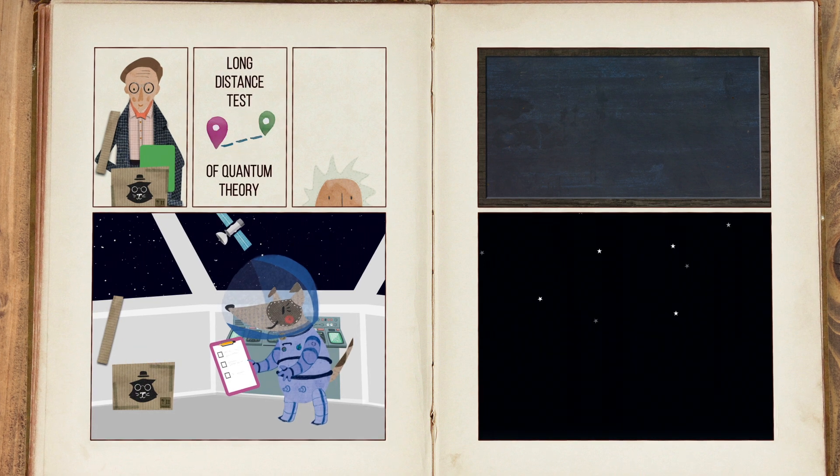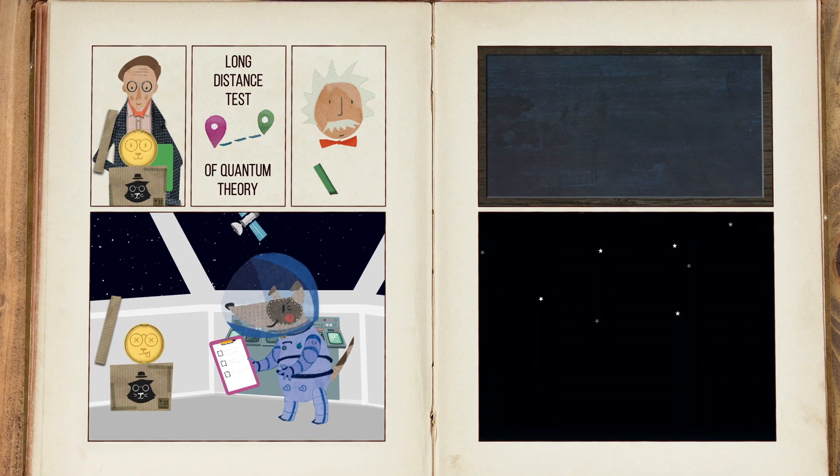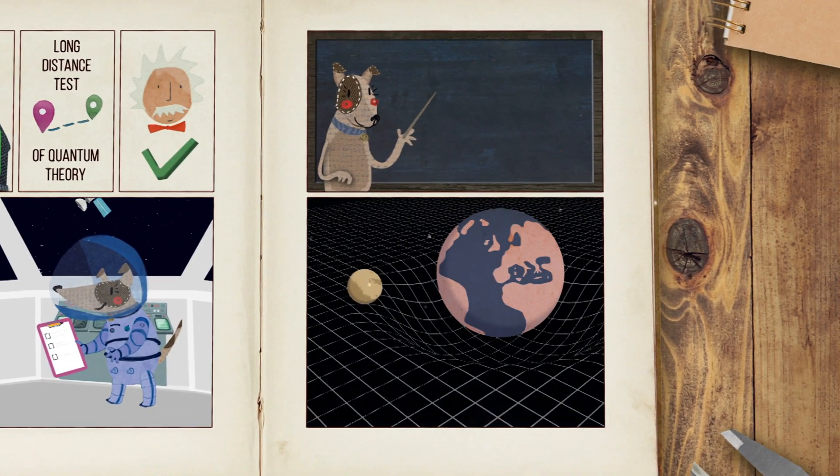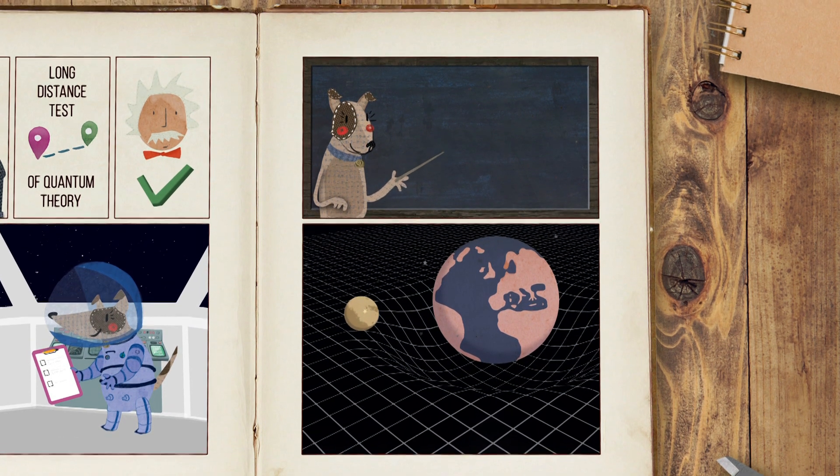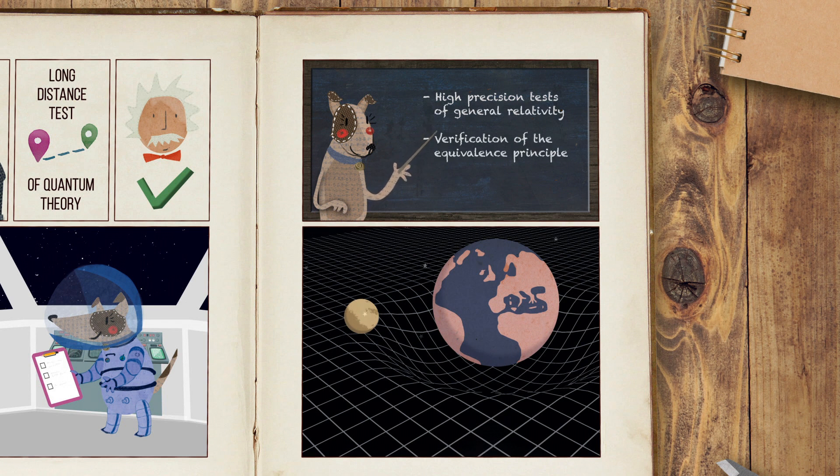They will allow us to understand the interplay between relativity and quantum entanglement. The free-falling dynamics of massive objects in space will enable high precision tests of general relativity and the verification of the equivalence principle for quantum systems.